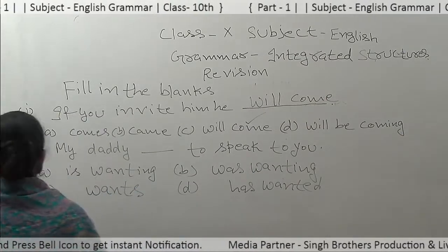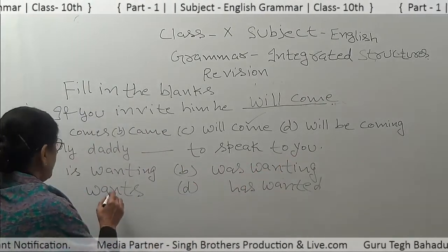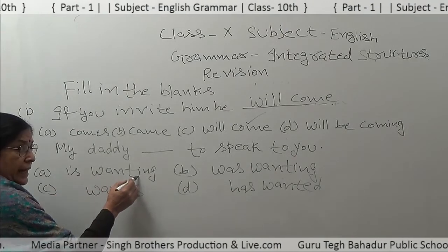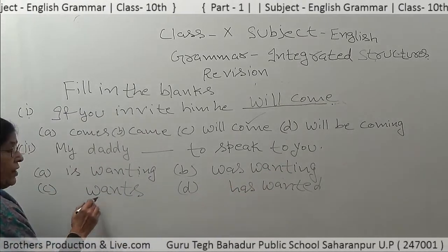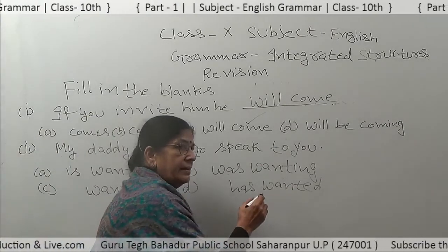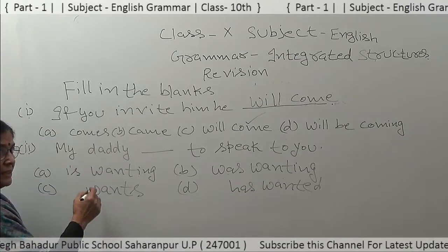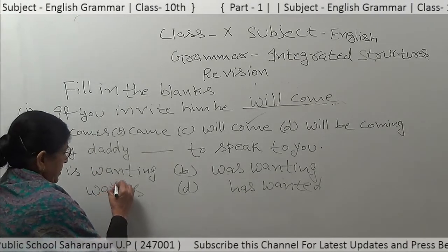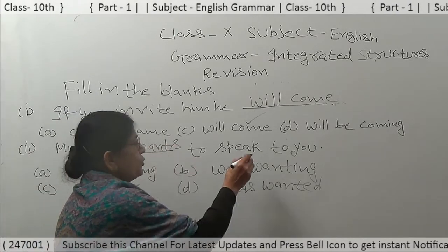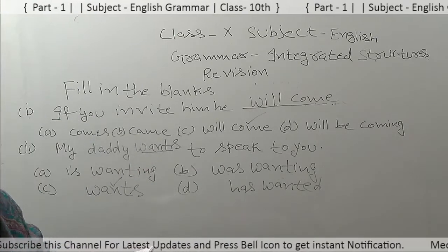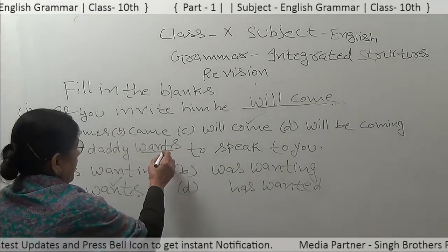Second sentence: My daddy dash to speak to you. Options are: is wanting, was wanting, wants, has wanted. 'Is wanting' is present continuous, 'was wanting' is past continuous, 'wants' is present indefinite, 'has wanted' is present perfect. My daddy — which is the correct option? 'Wants.' My daddy wants to speak to you. 'Daddy' is third person singular number, so that is why we take 'wants.'